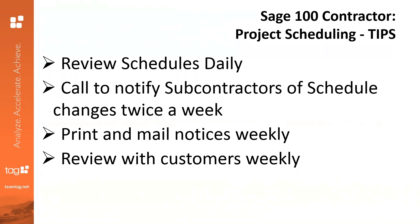Another tip: call to notify subcontractors of schedule changes twice a week. Twice a week, determine which tasks will be performed, and over the next two weeks continue to call the subcontractors and material suppliers associated with those tasks to remind them of when they're expected to arrive. If those dates have changed, make sure you continue to inform affected subcontractors and material suppliers.